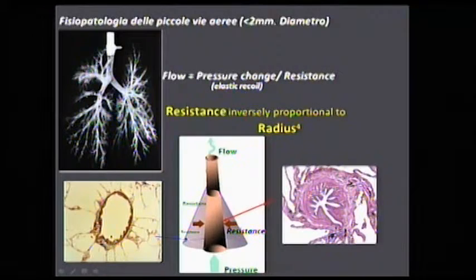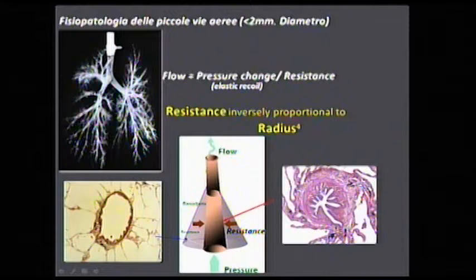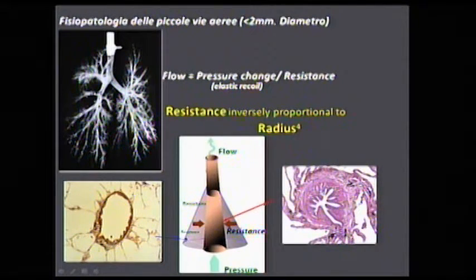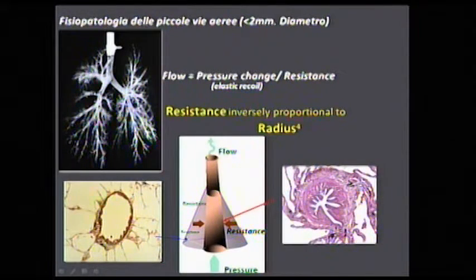As we smoke over years and years, the airway goes from open to narrowed. Because of the cross-sectional area of these very small airways, it goes from large to very small. Since resistance is inversely related to the radius to the 4th power, flow is going to be very decreased, and this abnormality of these airways develops over time.